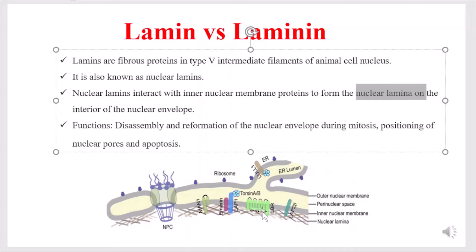Here you can see that this network is called the nuclear lamina, which is present in the interior of the nuclear envelope. So nuclear lamins interact with inner nuclear membrane proteins to form the nuclear lamina on the interior of the nuclear envelope.